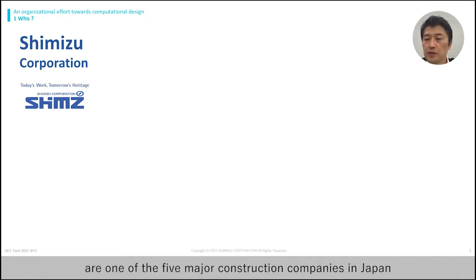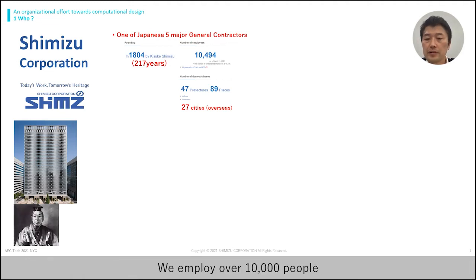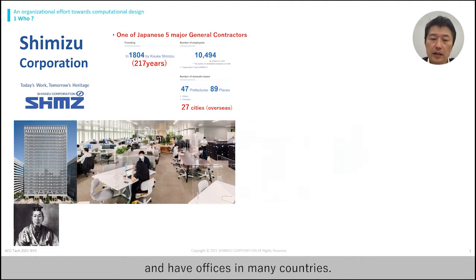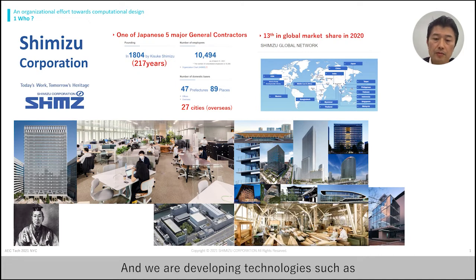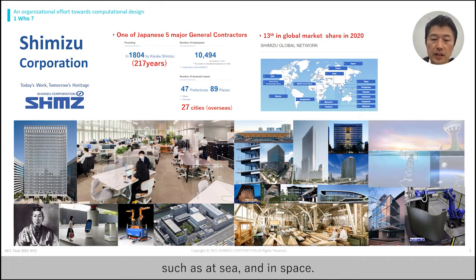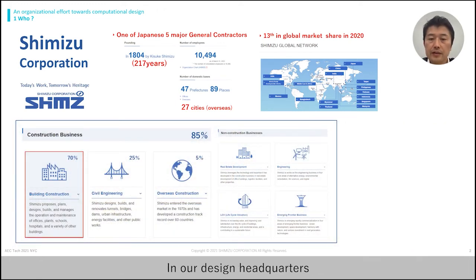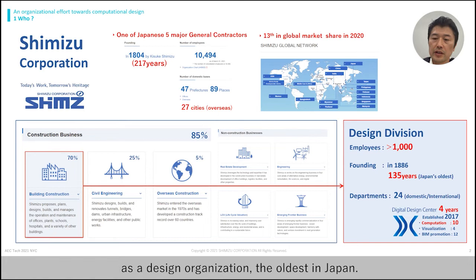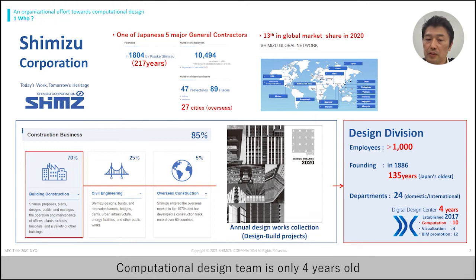Our company, Shimizu, is one of the five major construction companies in Japan and has a history of more than 200 years since our establishment. We employ over 10,000 people and have offices in many countries. We have many own facilities such as a Technical Research Institute and work factories, and we are developing technologies such as robots and 3D printers, and frontier developments such as at sea and in space. Most of our business is in the building construction sector. In our design headquarters, we have over 1,000 people. It has a history of 135 years as a design organization, the oldest in Japan. The computational design team is only 4 years old and has 10 people.